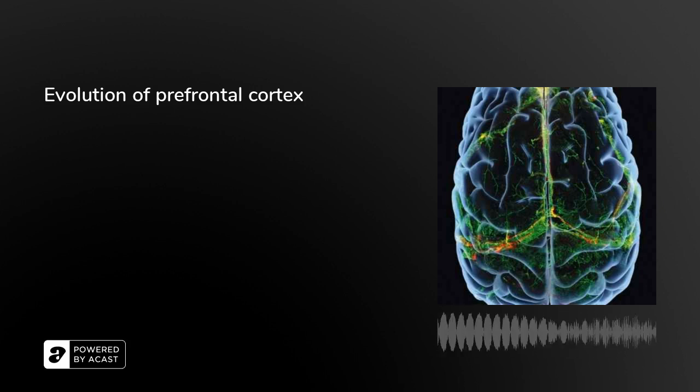Tree shrews, one of our closest relatives, provide an interesting case because there is some evidence that they may have some regions of granular prefrontal cortex. There are some recent papers that suggest that, and there's an older paper as well, a lesion study, which suggests that they may have spatial working memory abilities that are similar to primates.